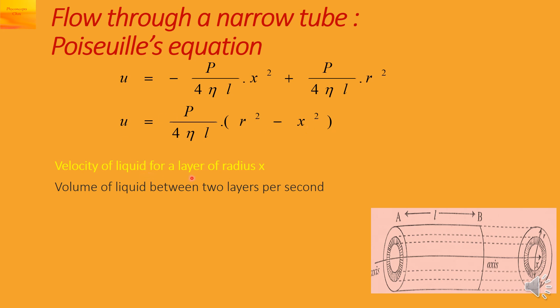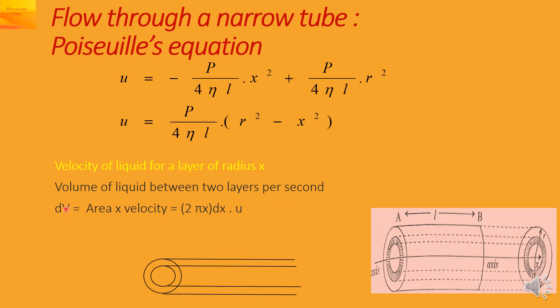This is the velocity of the liquid for a layer at a distance x from the axis. We will now write down the volume of liquid between two layers per second, denoted dV. It is the area between two imaginary cylindrical shells times the velocity. The area is the circumference 2 pi x multiplied by the thickness dx between the two shells.